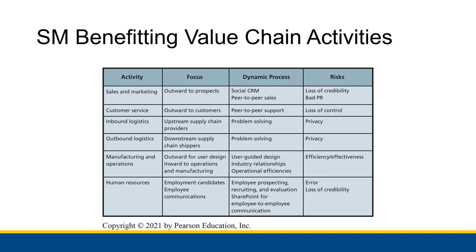The risks here involve loss of control. If someone is complaining publicly, a lot of people will see it and may not see the organization's response. But also, by responding as an organization, you expose the problem to even more people who wouldn't have seen it otherwise and might now start associating that problem with the brand. So the risk versus reward of reaching out to help versus potentially spreading awareness of the problem can be tricky.